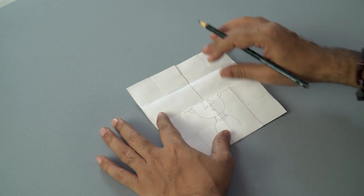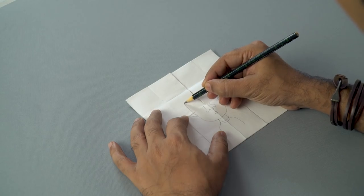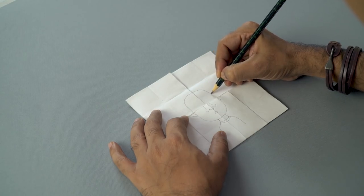Now you can open one of the halves like this. So you can see now you have only half of the face. So you can complete it and draw a new character on this one.